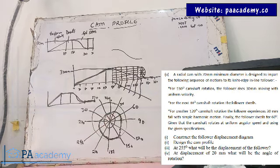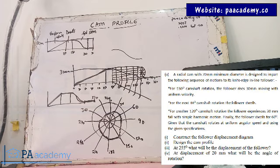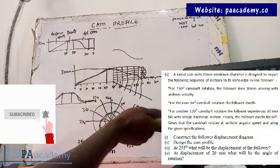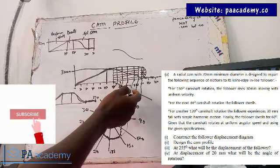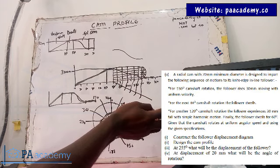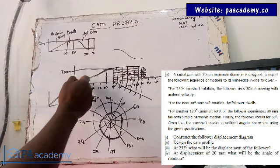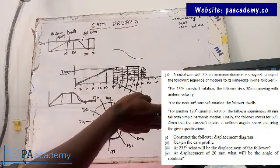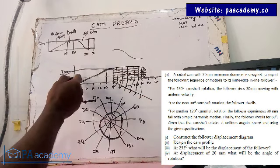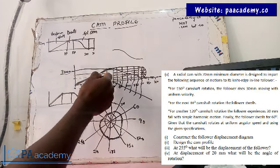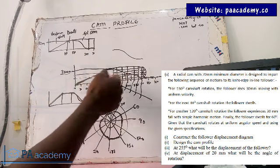Having done that, the next thing is to answer the remaining questions. It says at 255 degrees, what will be the displacement of the follower? To answer that, go to your displacement diagram, trace out 255 degrees — which is between 240 and 270 — and where the curve is touching it, measure the height. Remember, from the bottom to the top is 30mm, so you can work out the exact displacement. The next question asks: at a displacement of 20mm, what will be the angle of rotation? Trace out 20mm on the vertical axis, draw a horizontal line, and see where it touches the displacement diagram — that gives you the angle.